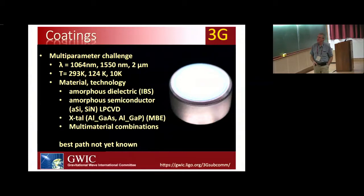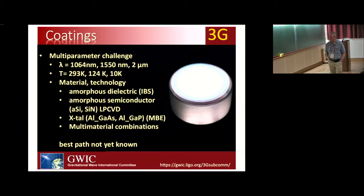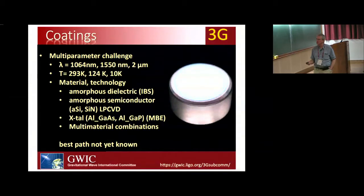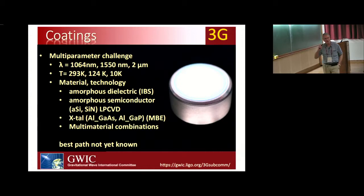Coatings is another multi-parameter problem: three different wavelengths, three different temperatures. IBS — ion beam sputtering — is what's currently used in today's interferometers. We've got to look at different types: amorphous silica, silicon nitride. Crystalline coatings developed using the MBE process seem to have very nice properties, but scaling them up requires significant R&D — the company that does this is looking at a $10 million price tag to scale up to the sizes we may need.